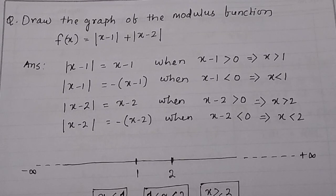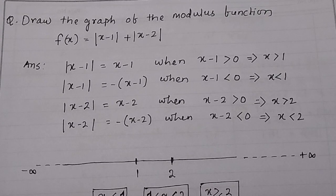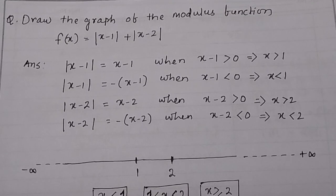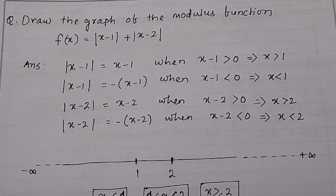Draw the graph of the modulus function f(x) = |x - 1| + |x - 2|. Here you have two modulus functions given: one is x minus 1 and another one is x minus 2.